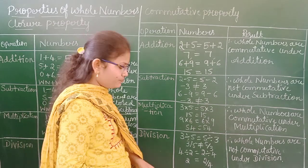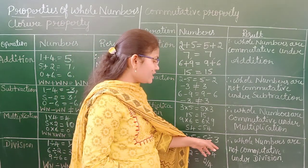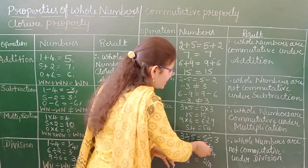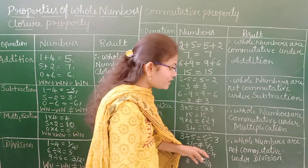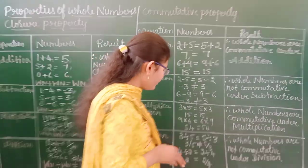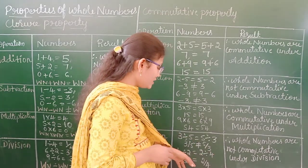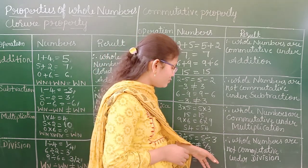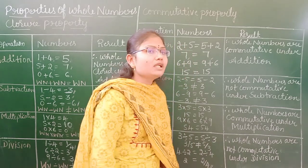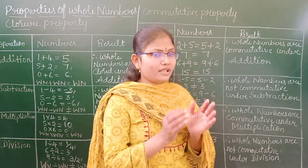For division: 3 divided by 5 gives 3/5, and 5 divided by 3 gives 5/3 — these are not equal. Similarly, 4 divided by 2 equals 2, but 2 divided by 4 equals 2/4 — the results are not equal. So whole numbers are not commutative under division.